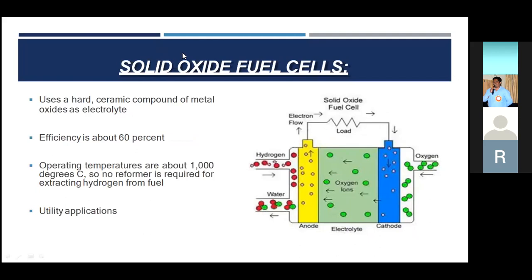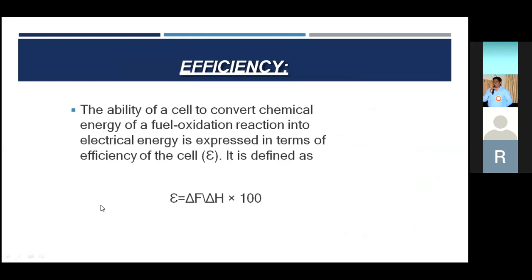And another is solid oxide fuel cells. It uses a hard ceramic compound of metal oxide as the electrolyte. Efficiency is about 60%, operating temperature is 1000 degrees Celsius, so no reformer is required for extracting hydrogen from fuel. That is all I wanted to say about types of fuel cells.